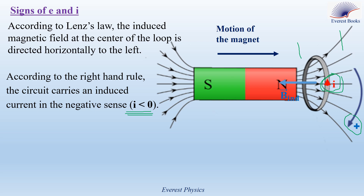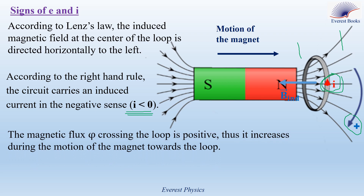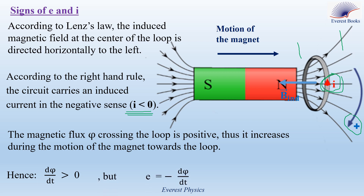Now let's move to Faraday's law. During the motion of the magnet towards the conducting loop, the magnetic flux increases because it is positive, which means that the time derivative of Φ is positive. By applying Faraday's law, dΦ/dt is positive and here we have a negative sign, so E is negative.